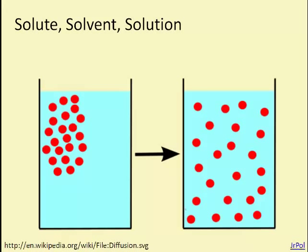Before we do that, we need to talk about some terms as well. We need to talk about what a solute, a solvent, and a solution are. A solute is simply an ion or molecule that's dissolved in a solvent, often water. In fact, in the case of our course, we're pretty much just going to talk about water as being the solvent.